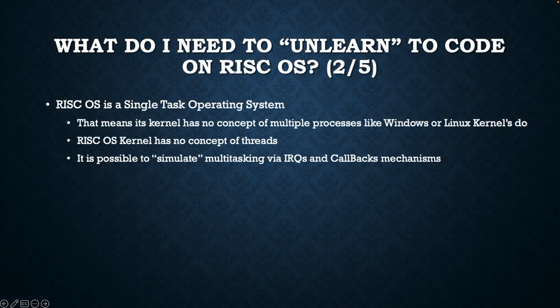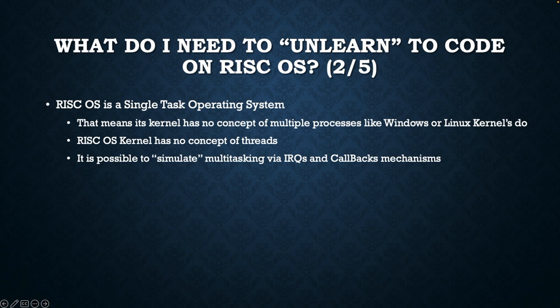RISCOS is a single-task operating system. That means its kernel has no concept of multiple processes like Windows or Linux kernels do. The RISCOS kernel has no concept of threads either. It is possible to simulate multitasking using the kernel only via IRQs and callbacks mechanisms. However, the proper multiprocess and multi-threading environment on RISCOS is offered by the desktop environment, not by the kernel.